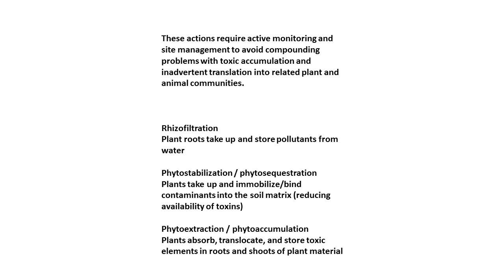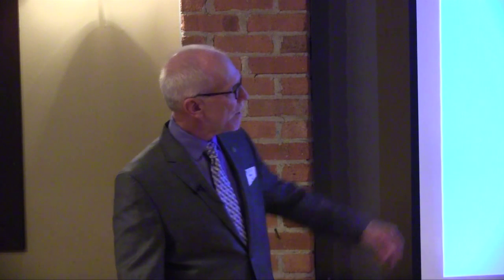Phytosequestration and phytoaccumulation are typically used at active sewage plants as part of a treatment train to get heavy metals out of the water. With rhizofiltration, the roots are holding the pollution in situ, so if you have different species that eat those roots — like geese or fish — you can have problems with the population. I don't use those unless it's a very managed condition.